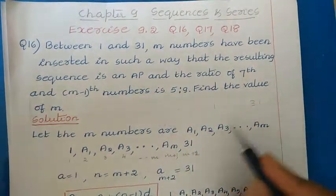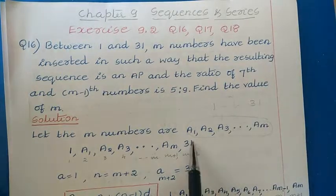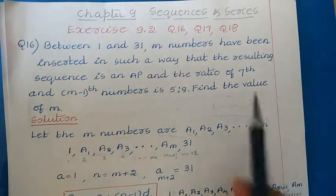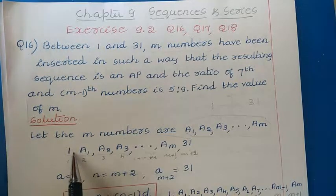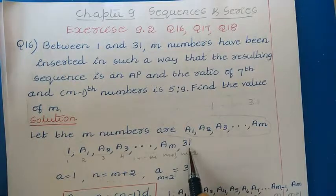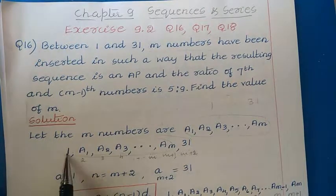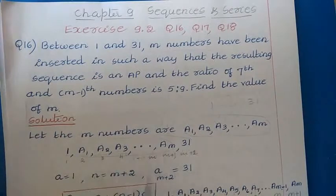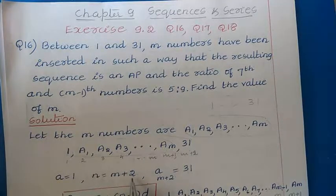Let the inserted numbers be A1 to AM. So the sequence is: 1, A1, A2, A3, ..., AM, 31. The resulting sequence is an AP. The first term A = 1 and the last term is the (M+2)th term = 31, because we have M inserted numbers plus the two endpoints, giving M+2 terms total.